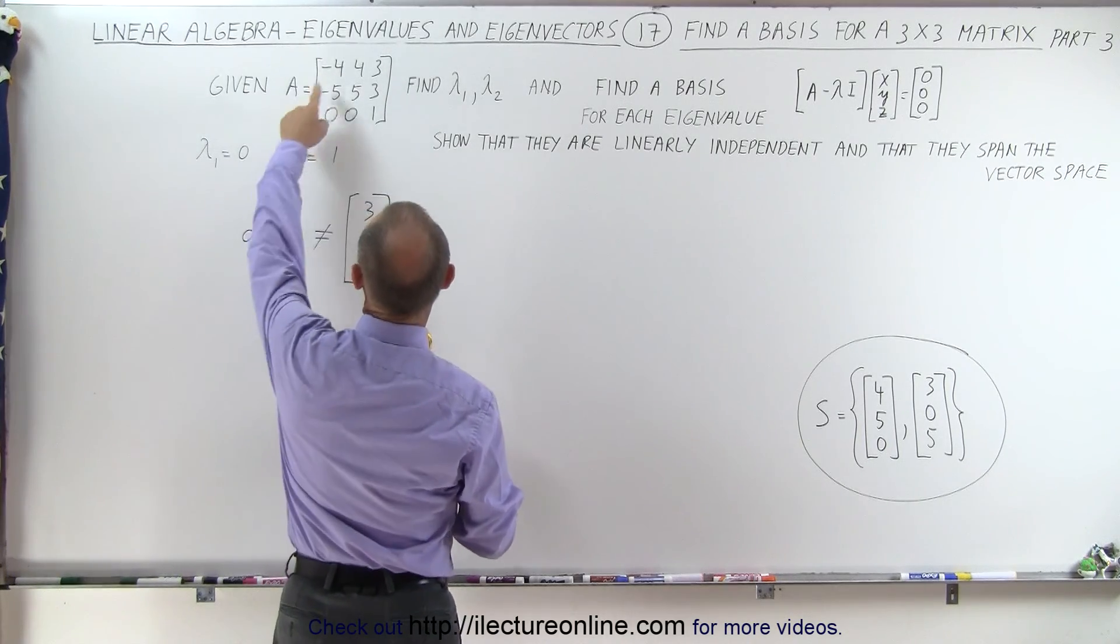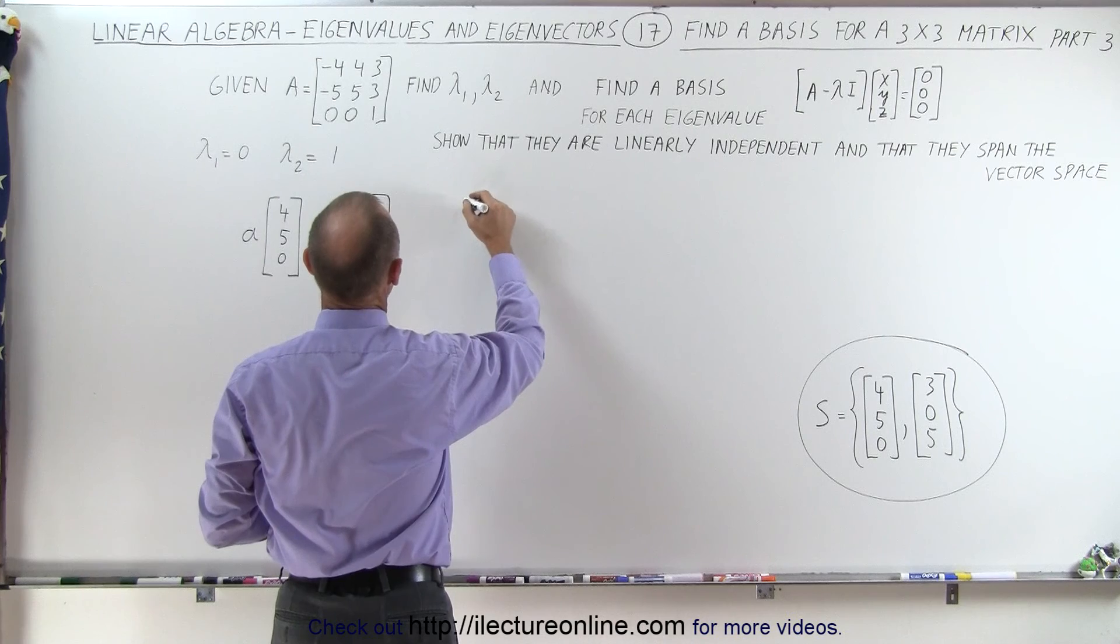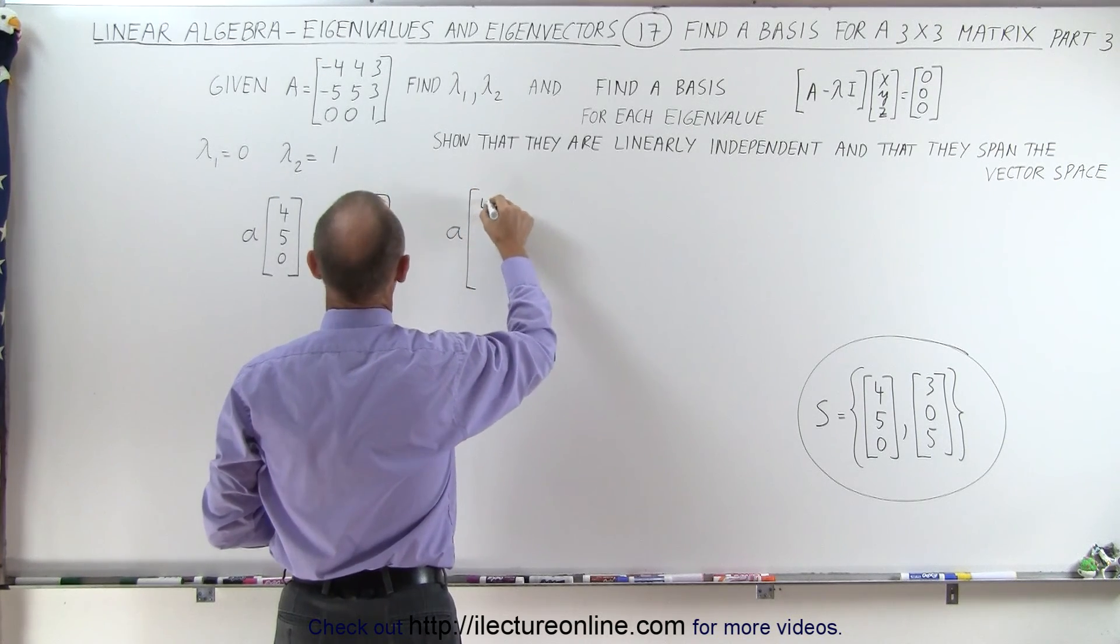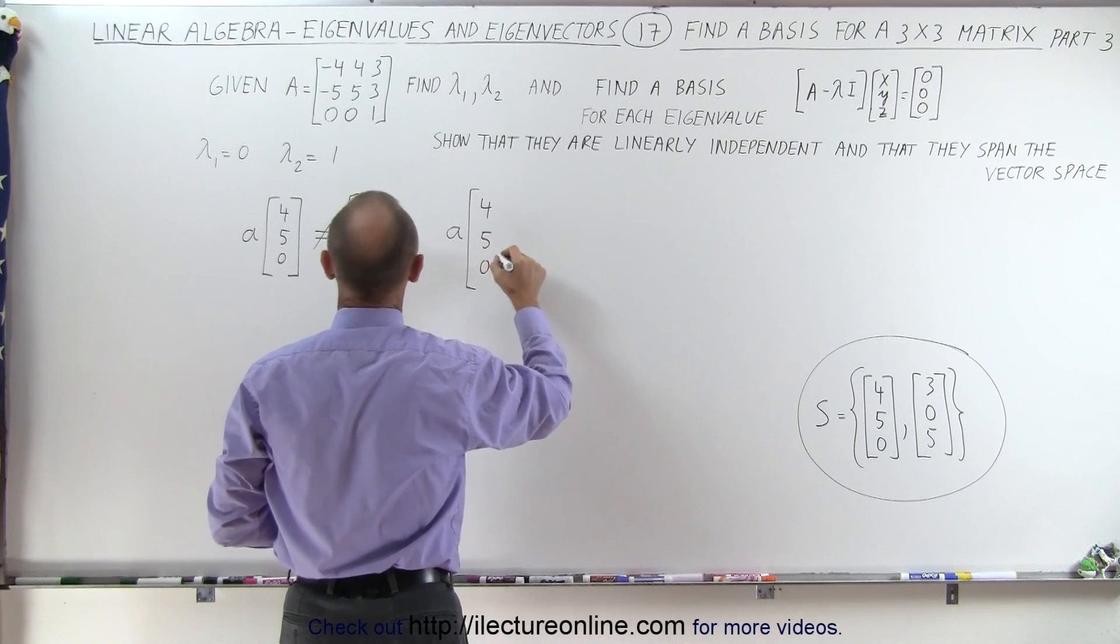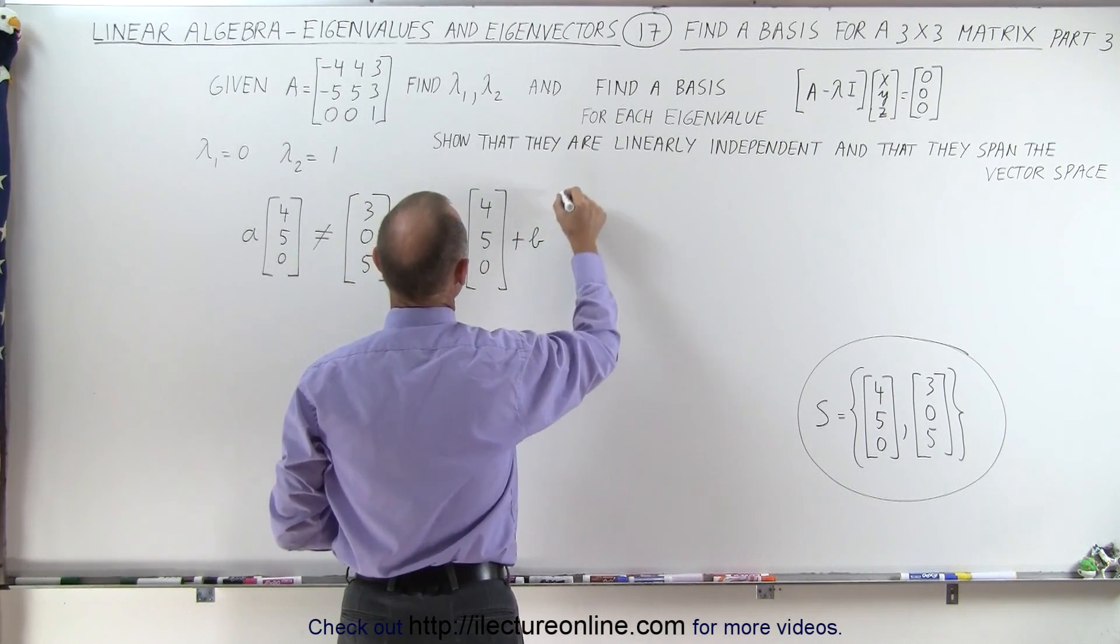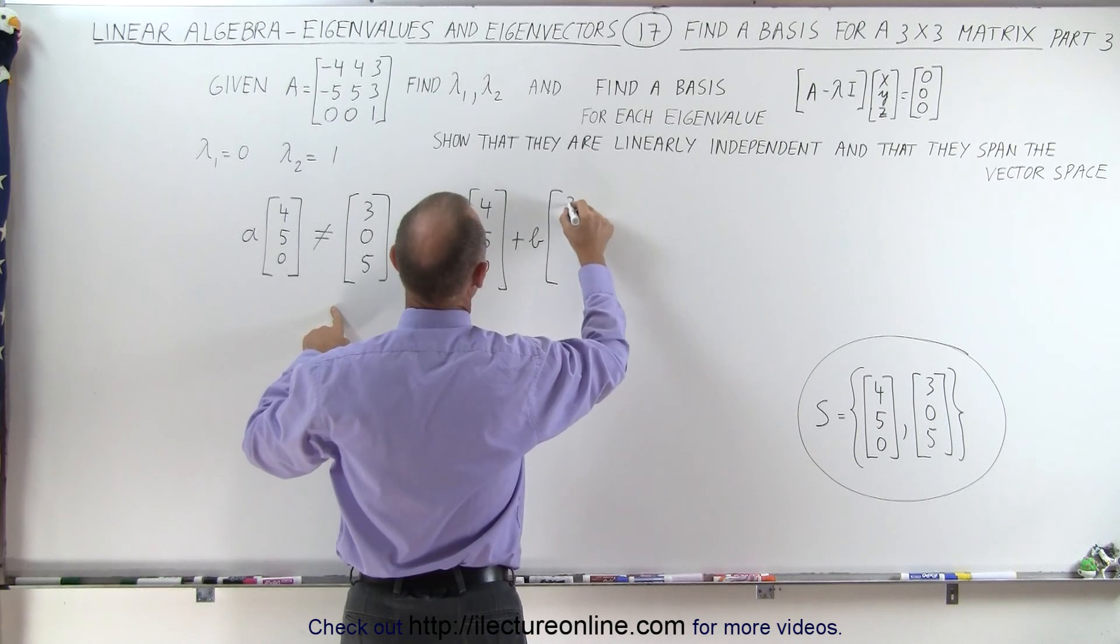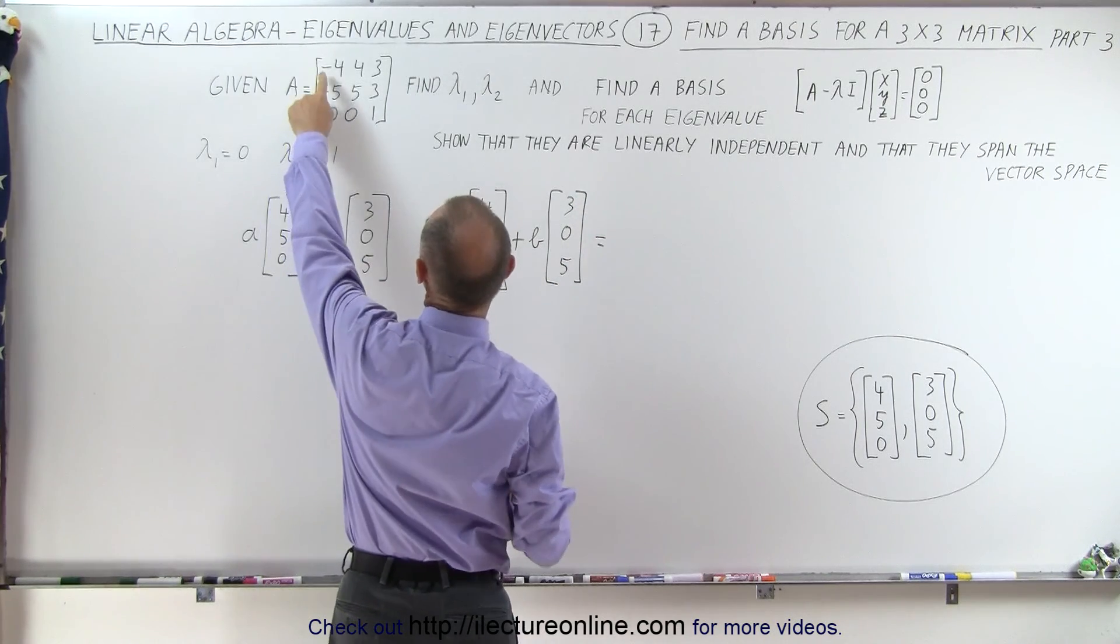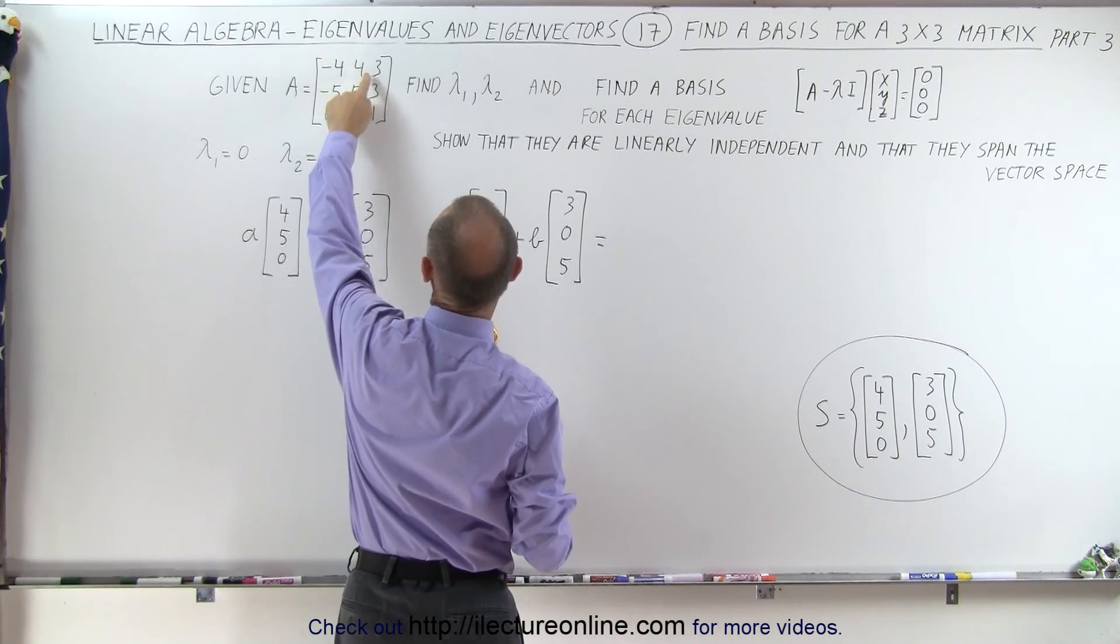Well first of all let's start with the first one. So we're trying to find a times [4, 5, 0] plus b times [3, 0, 5] and somehow we want to make that equal to... Let's take the one over here [3, 3, 1].